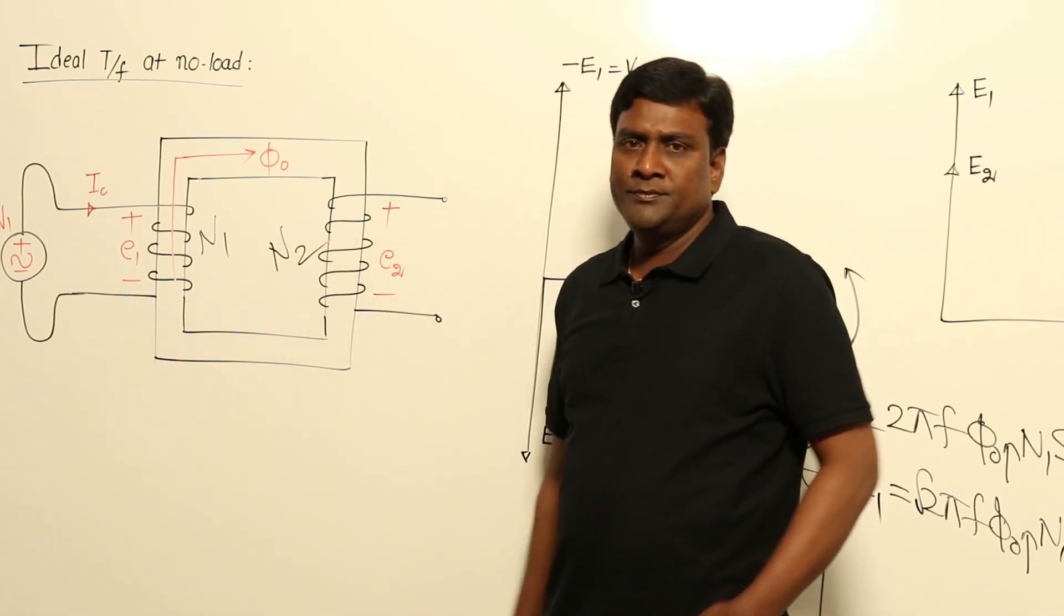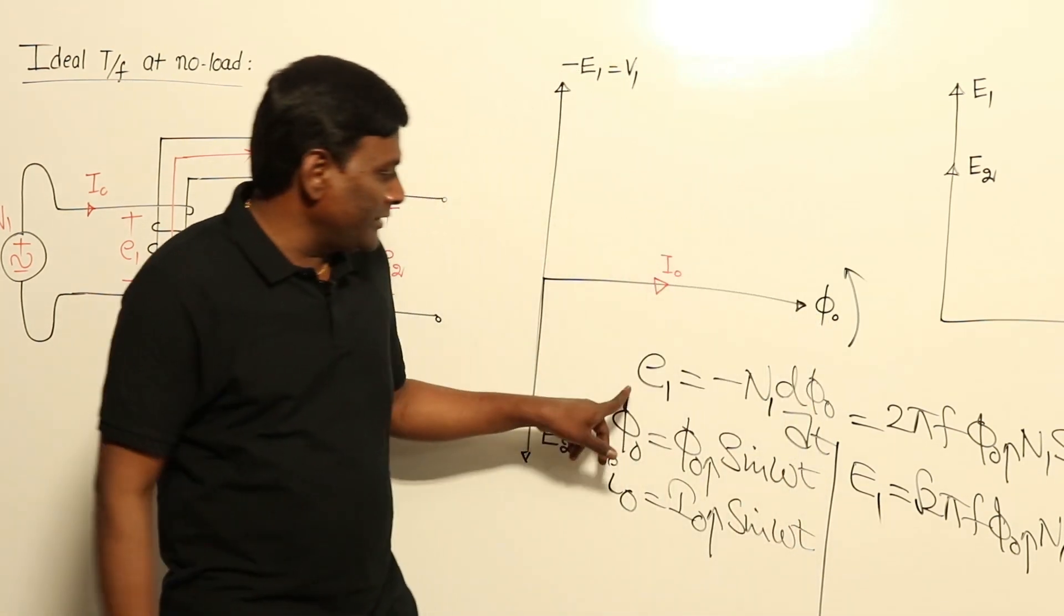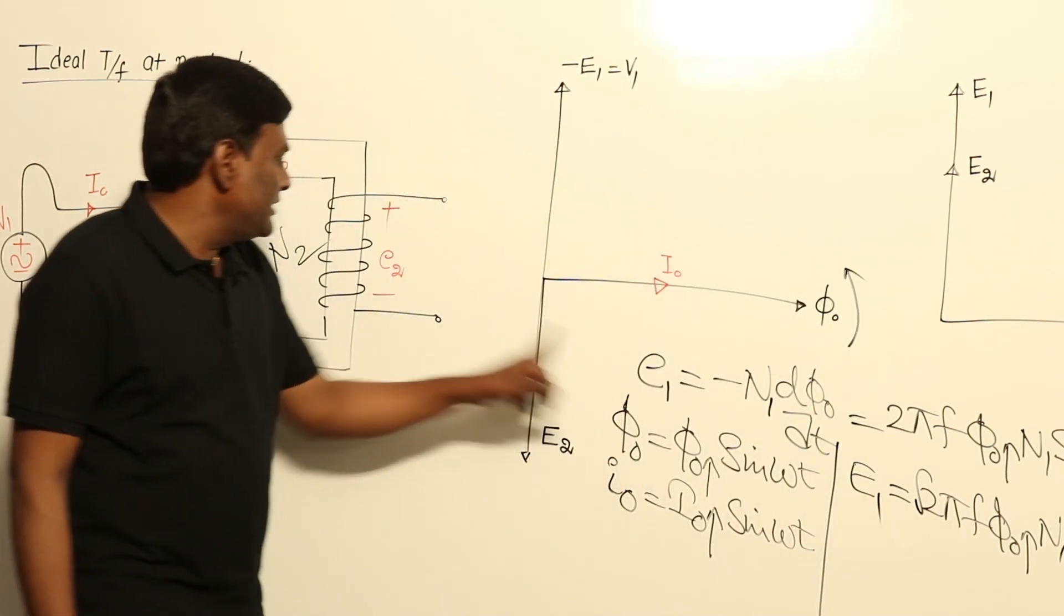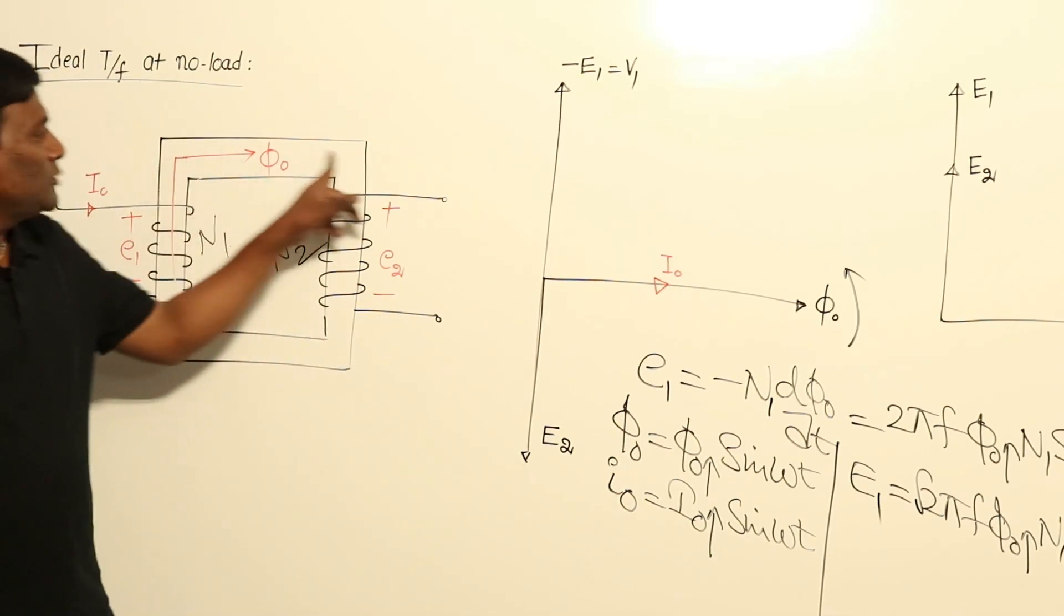So because of this, induced voltage will be E2. How many number of turns? Let me consider number of turns as N2. Now if I consider N2 in this particular equation, induced voltage here is going to be E2 and number of turns are N2.